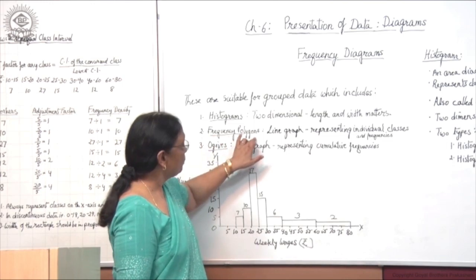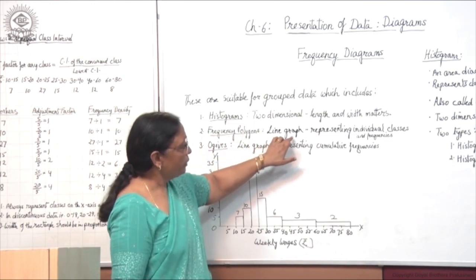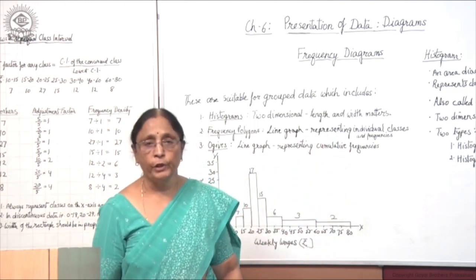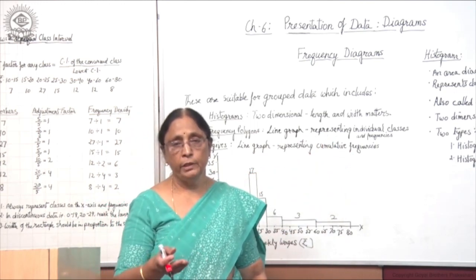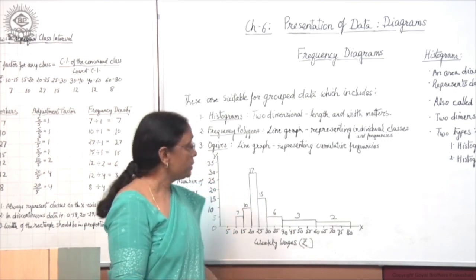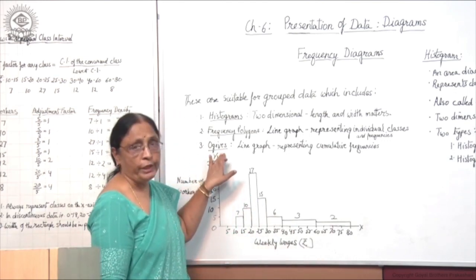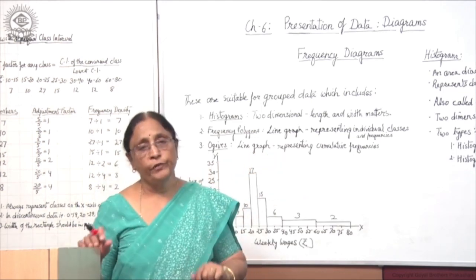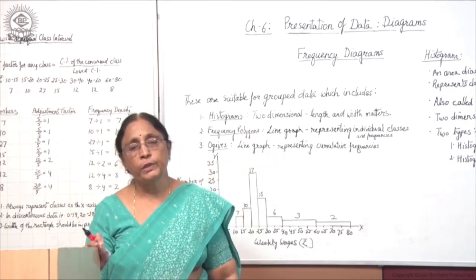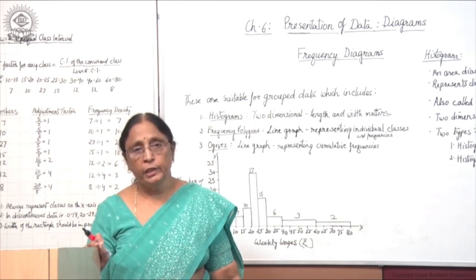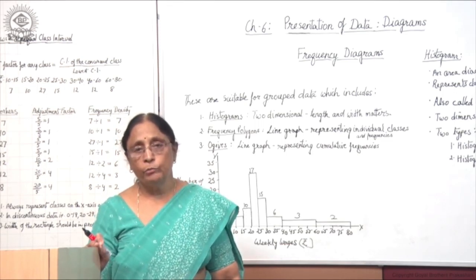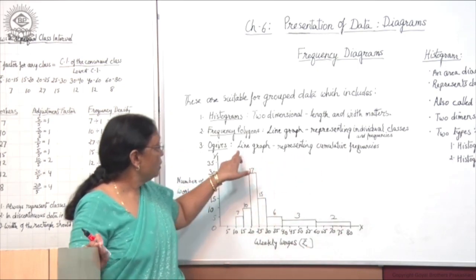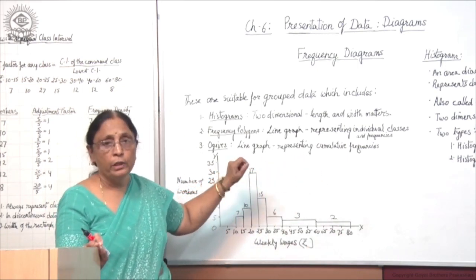But normally with bar diagrams only length is considered; width is not considered and we draw the length of the bars according to the value given. But in histograms, length and width both matter because these are area diagrams. Second is frequency polygons — these are line graphs representing individual classes along with their frequencies, to be taken after histograms. Then next is ogives, also line graphs, which represent cumulative frequencies using the less than method and more than method.